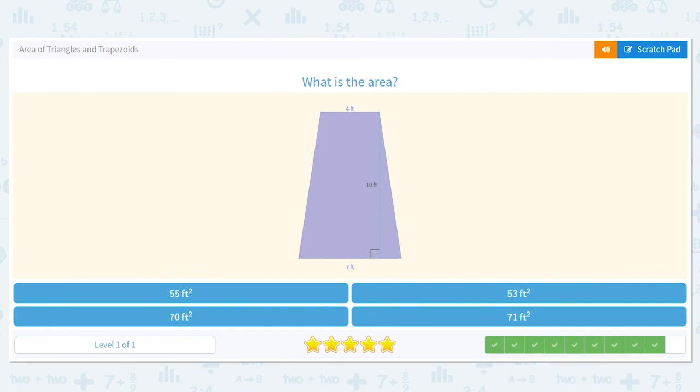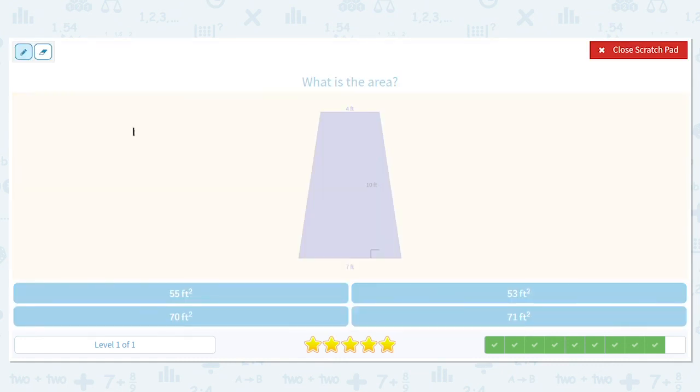And what is the area? One-half, seven plus four times 10. So that'll become 11 times five, or 55 square feet.